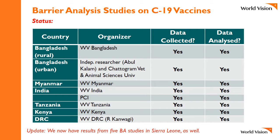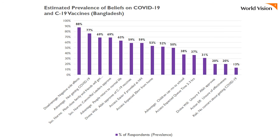This table shows that at this point we have conducted barrier analysis looking at COVID-19 vaccine acceptance in six countries. We're hoping to publish these results soon and we're eager to find out what you will find in your country. We feel that using barrier analysis gives practitioners a much better idea of what they need to be focusing on in terms of messaging and activities to promote a behavior, especially when compared to just knowledge, attitude, and practice studies or focus groups.